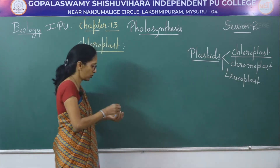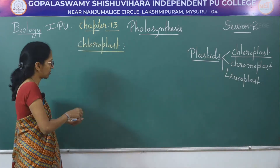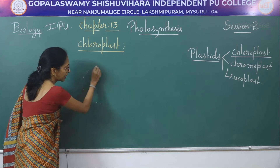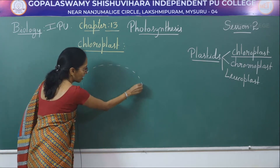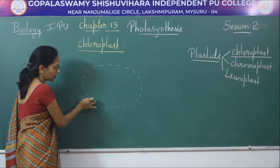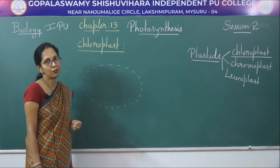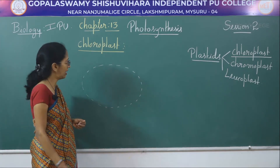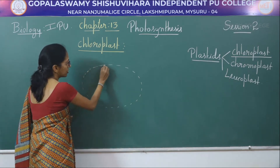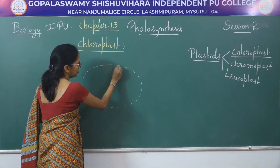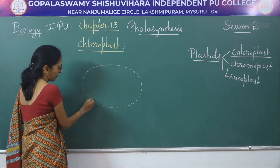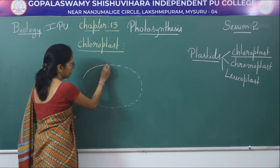Now we will look at the structure of chloroplast. Chloroplast is a green colored protoplasmic structure present in both stem and leaves. It is usually oval in shape.